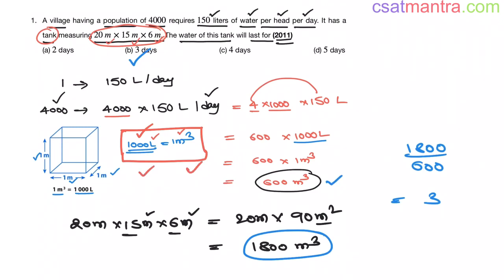So 1 person uses 150 liters per day. Then 4000 people use this many liters. Convert them into meter cube. Now you know the total volume of the tank. Total volume by volume used per 1 day. So we will be getting number of days as 3. Clear?